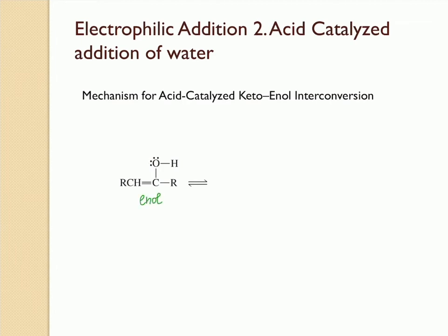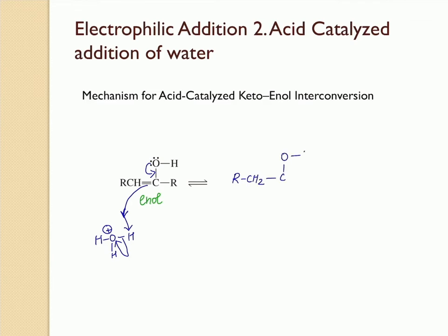For the mechanism of acid-catalyzed keto-enol interconversion — converting the enol form into the keto form — first, the electrons from the oxygen form a double bond between carbon and oxygen, while the electrons from the double bond abstract a hydrogen from the acid molecule, neutralizing the positive charge on oxygen. This leads to an intermediate, which then loses a proton as a water molecule abstracts the hydrogen and neutralizes the positive charge on oxygen, giving the keto form, which is comparatively stable.